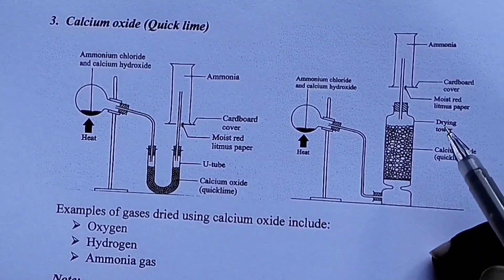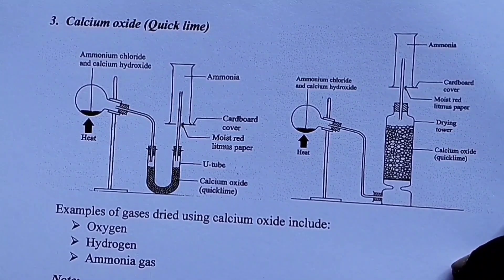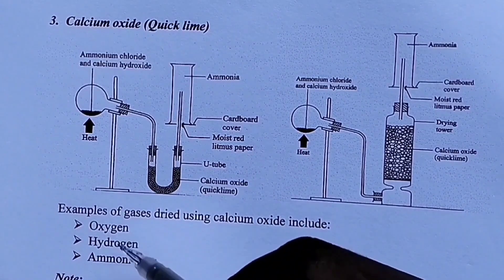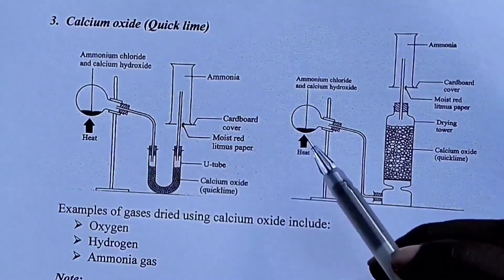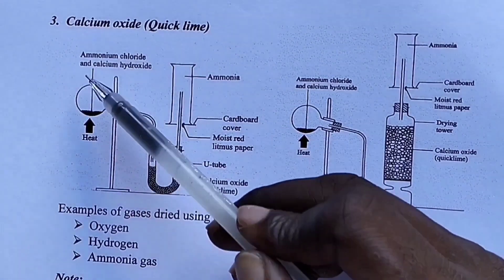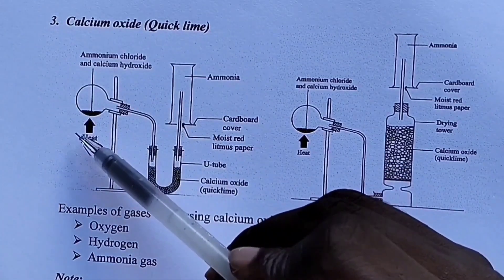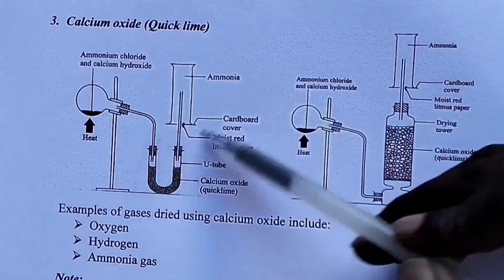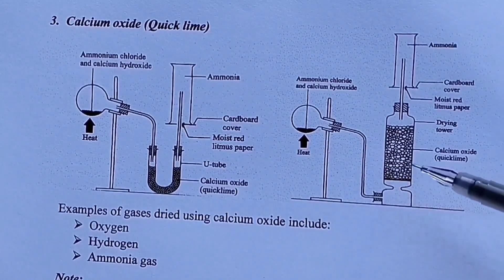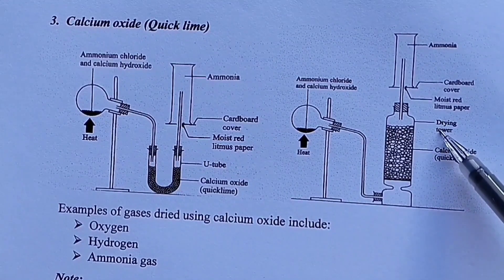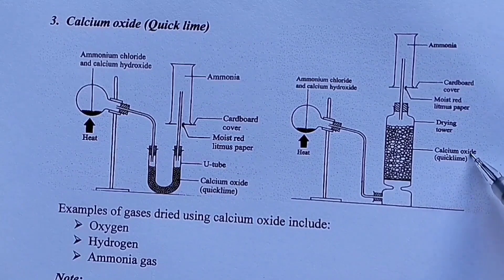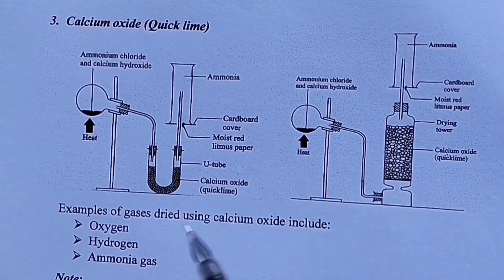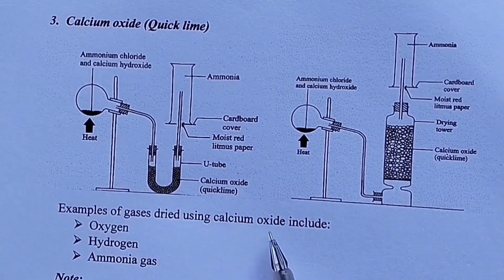The third drying agent is calcium oxide, also called quicklime. Examples of gases dried using calcium oxide include oxygen gas, hydrogen gas, and ammonia gas. In the setup, a gas produced by heating ammonium chloride and calcium hydroxide is dried using quicklime or calcium oxide in a U-tube, then collected. The drying tower is where the drying agent is placed. Ammonia gas is collected using the appropriate method of gas collection.